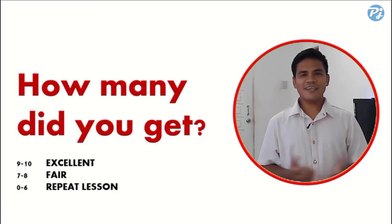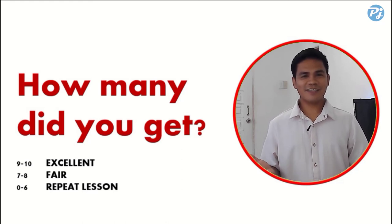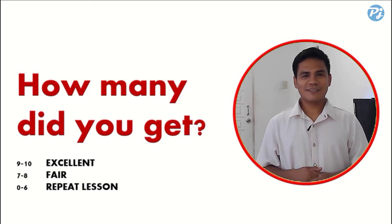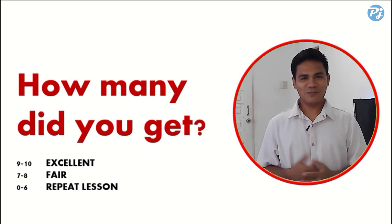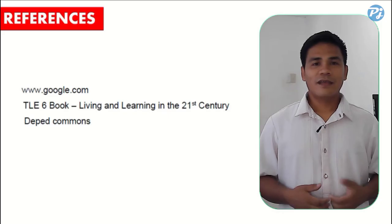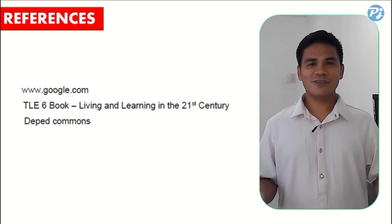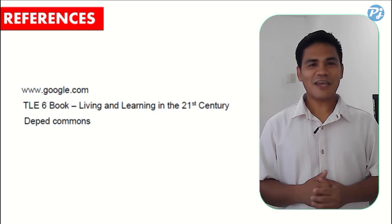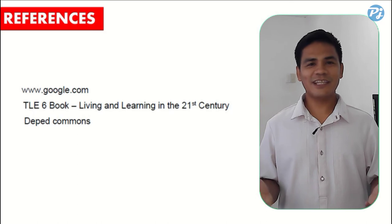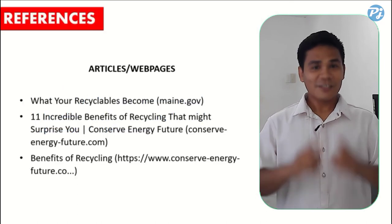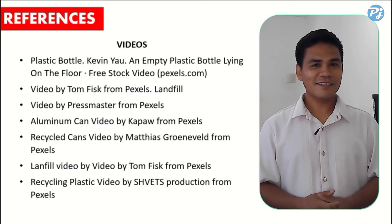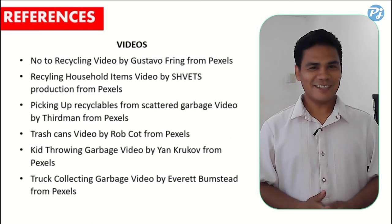That's the end of our quiz. If you got nine or ten, excellent! If you got seven or eight, very good. If you got six, it's fair. If you got zero to six, you have to repeat the whole lesson. This has been Teacher PJ saying that life is better with Technology and Livelihood Education. Stay at home, obey your parents, trust God — God bless you, bye!